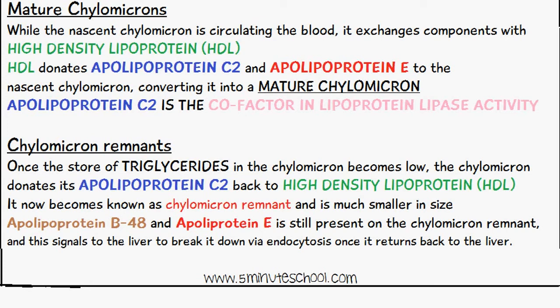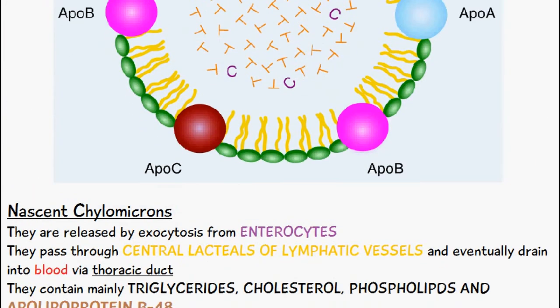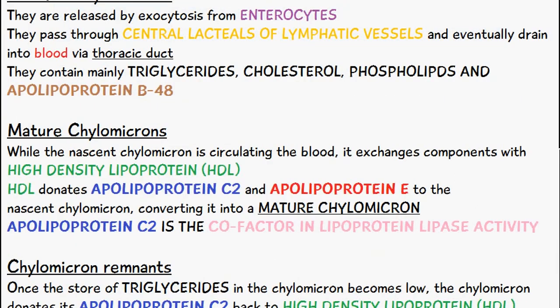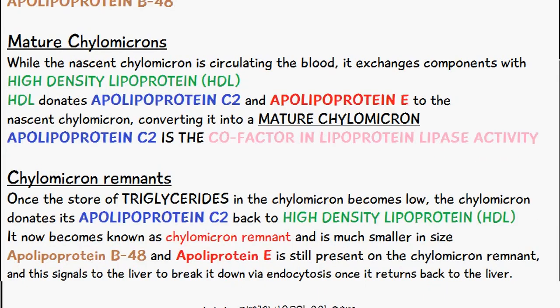So this was the life cycle of a chylomicron. It starts off as a nascent chylomicron, then becomes a mature chylomicron. After the store of triglycerides is reduced, it then becomes known as a chylomicron remnant once it donates apolipoprotein C2 back to the high density lipoprotein.